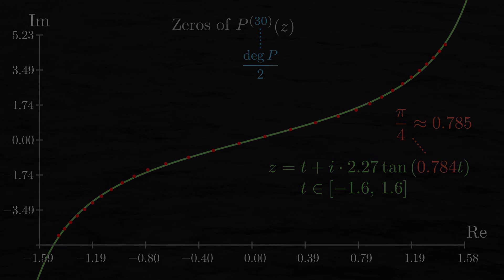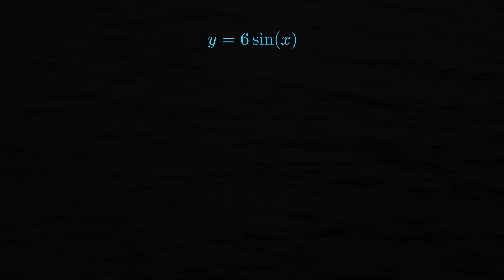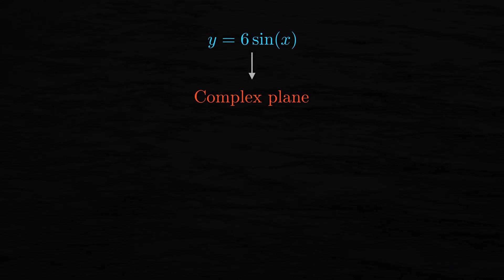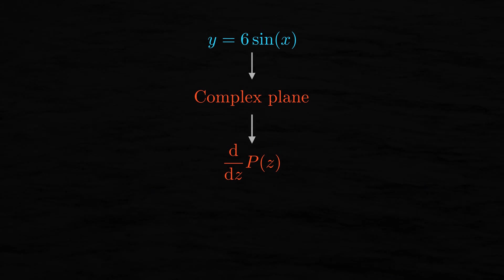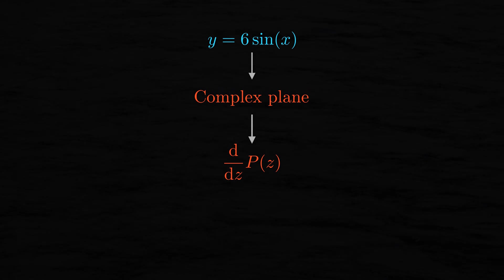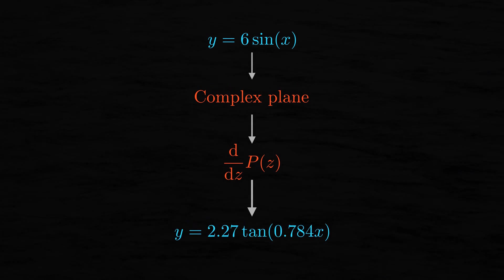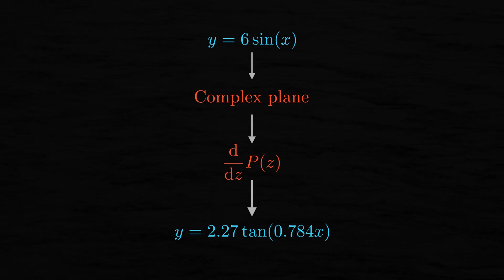So let's summarize what we've done. We started with a real function y equals 6 times the sine of x, though we projected the graph of this sine function onto the complex plane. Next, we repeatedly took the derivative of a polynomial with zeros on this projection. As a result, we came back from the world of complex numbers, with a real function y equals 2.27 times the tangent of 0.784x. That's weird, don't you think? Getting a tangent function from a sine function by taking the derivative a number of times.